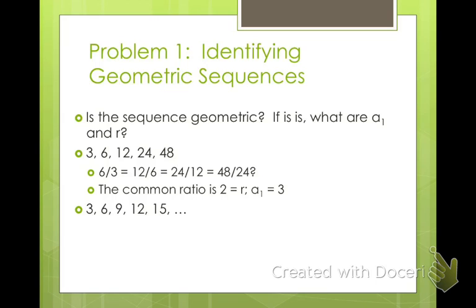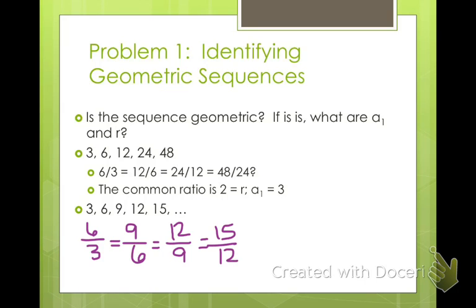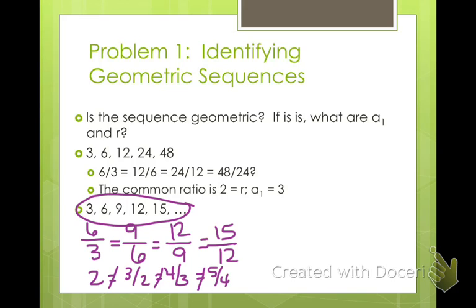What about the sequence 3, 6, 9, 12, 15? To determine if it's geometric, we compute the ratios: 6 divided by 3 is 2, 9 divided by 6 is 3 halves, 12 divided by 9 is 4 thirds, 15 divided by 12 is 5 fourths. Those aren't all equal, so this is not a geometric sequence. But notice the pattern — we add 3 each time. This is an arithmetic sequence.